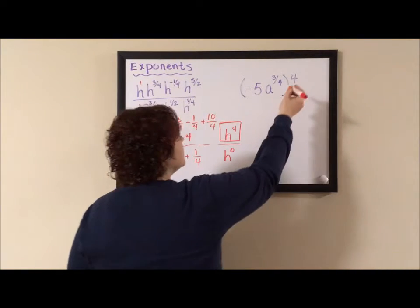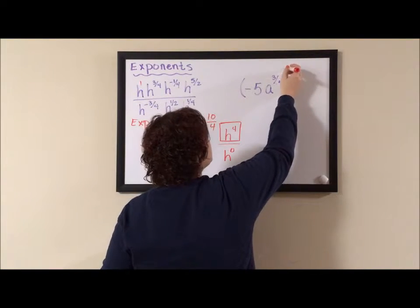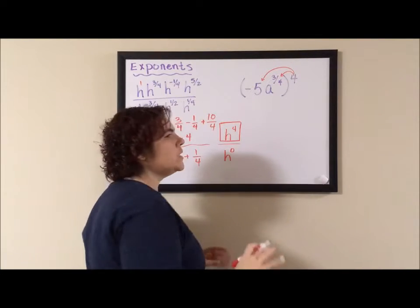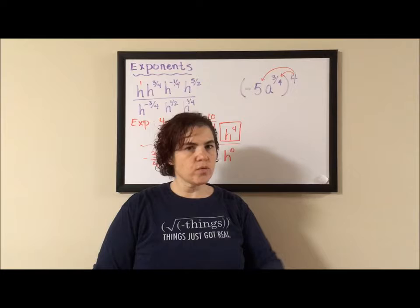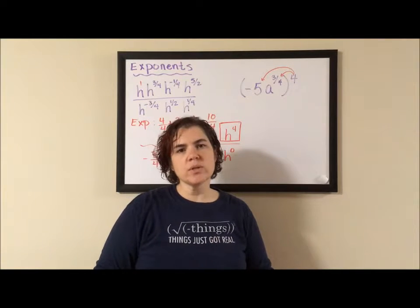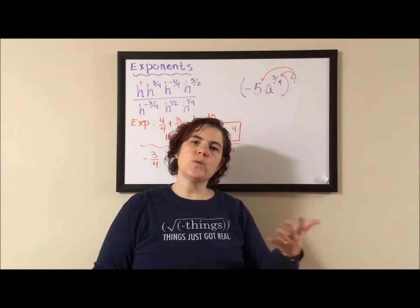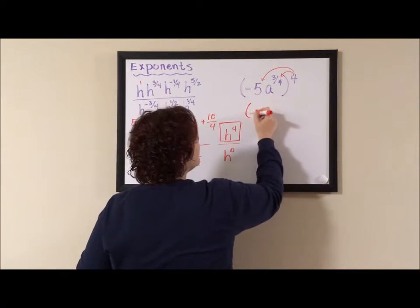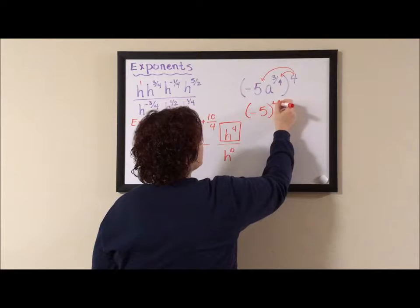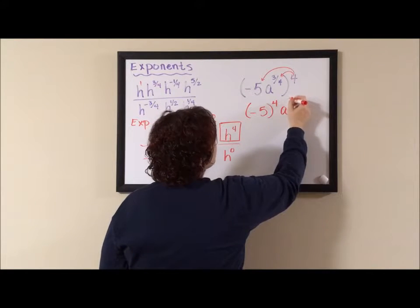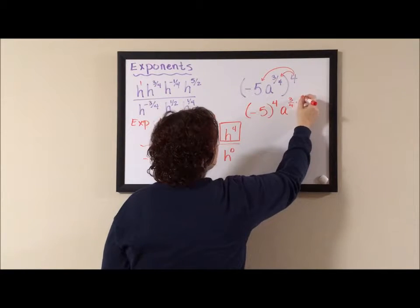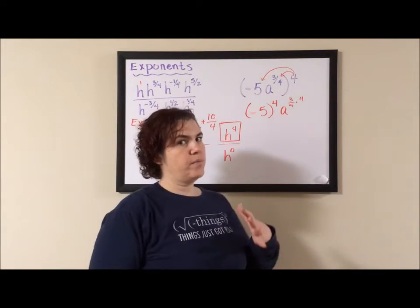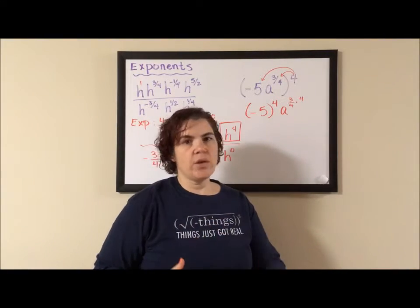But this exponent needs to distribute in to both bases. And once again, it can only distribute in because the parentheses are free of addition or subtraction. If there was any addition or subtraction, we wouldn't be able to do that distribution. So this is really negative five to the fourth times A to the three fourths times four. So there's a lot of areas to make a mistake on this problem.